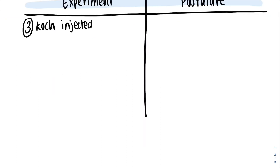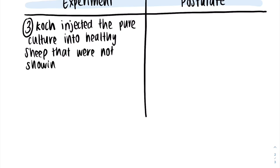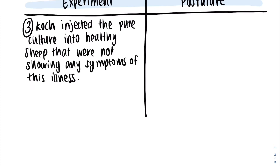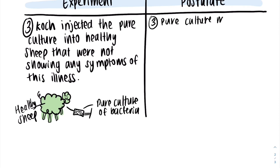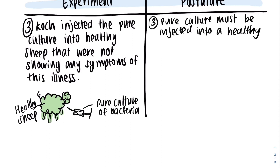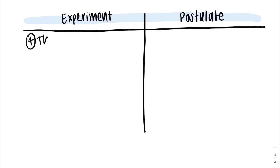Then Koch injected the pure culture into healthy sheep that were not showing any symptoms of this illness. This corresponds to his third postulate, that the pure culture must be injected into a healthy host.